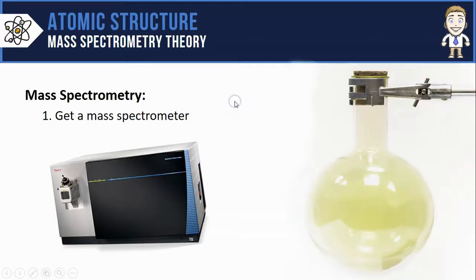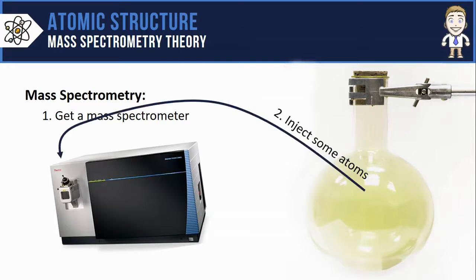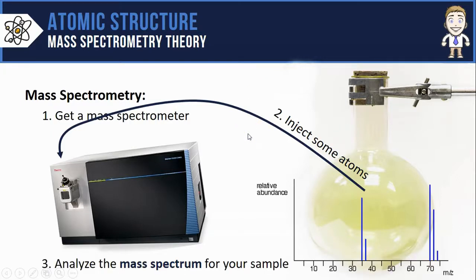Once you've got a mass spectrometer, all you need are some atoms like the chlorine atoms we just talked about. You inject those atoms into the instrument. It tests them, feeds the resulting data through a computer, and that computer gives you a graph that looks like this.